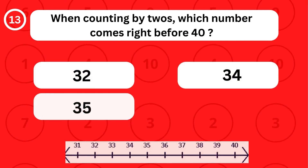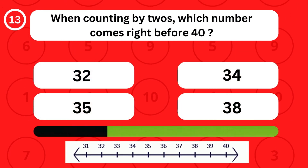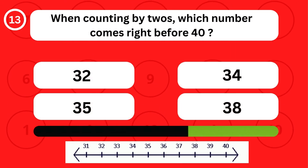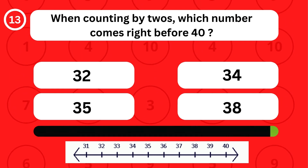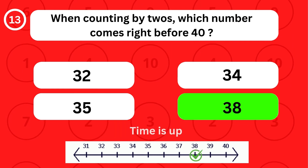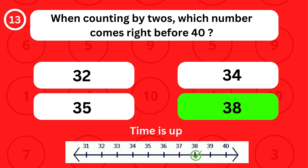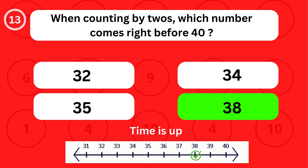When counting by twos, which number comes right before 40? When counting by twos, the number 38 comes right before 40.